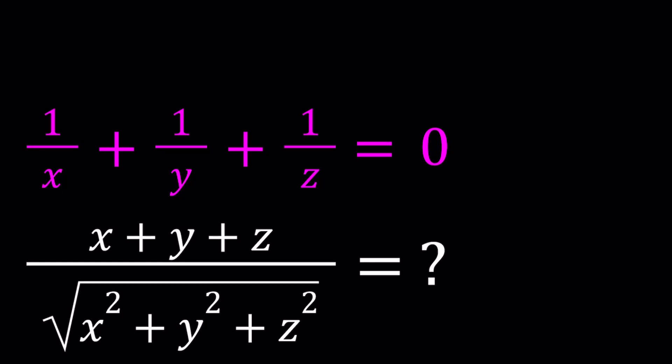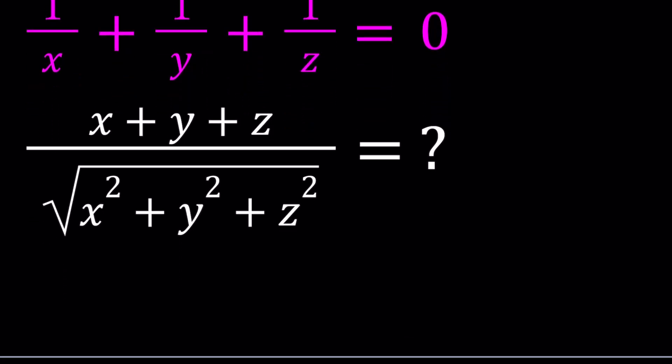Hello everyone. In this video, we're going to be simplifying an algebraic expression. We have 1 over x plus 1 over y plus 1 over z equals 0, and we're going to evaluate x plus y plus z all over the square root of x squared plus y squared plus z squared. Let's see how we can do this in two different ways.